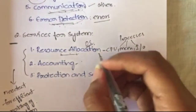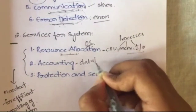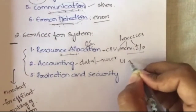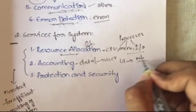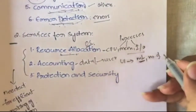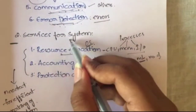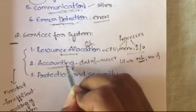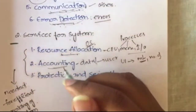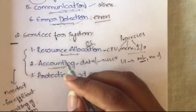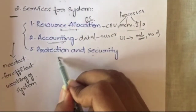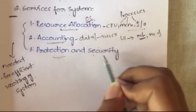The next service is accounting. Accounting means calculating or maintaining data about how much resources or data a particular user is using. For example, for a given user, the amount of data they are using and the number of resources they consume is all tracked by the operating system. This service is called accounting — maintaining data about the resources and data a process or user is consuming.